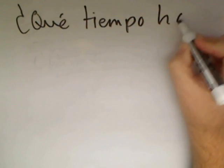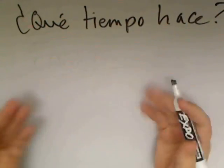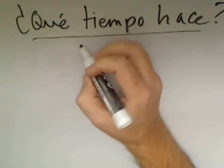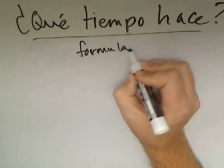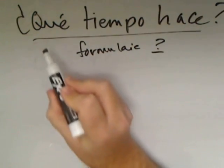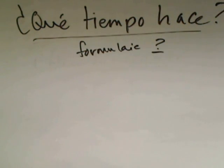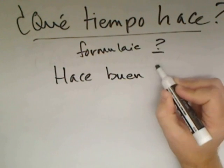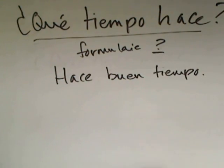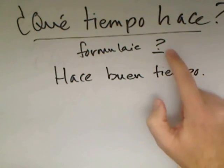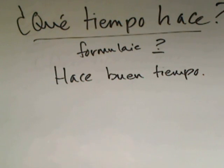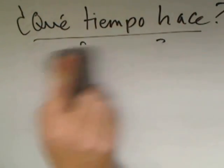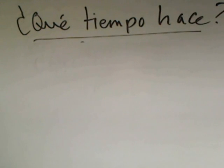¿Qué tiempo hace? You remember back in part two, we featured this particular question as an example of a formulaic question, in the sense that its literal meaning doesn't translate directly into 'what's the weather like.' The responses — for example, 'the weather is nice,' hace buen tiempo — are equally formulaic. It's formulaic in the sense that the question is always the same and the response patterns are relatively fixed.